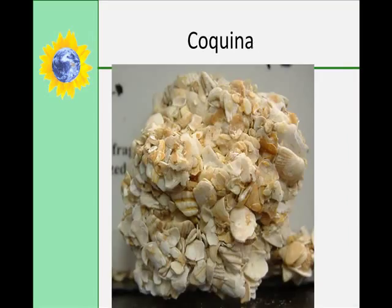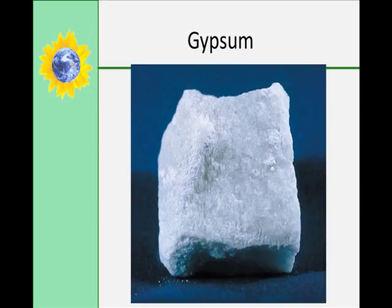Coquina is an organic limestone made from cemented animal shells — and it's incredibly sharp. Gypsum is a rock formed from only the gypsum mineral that has been crushed and compressed. Gypsum is the primary component of wallboard or drywall used in housing construction.